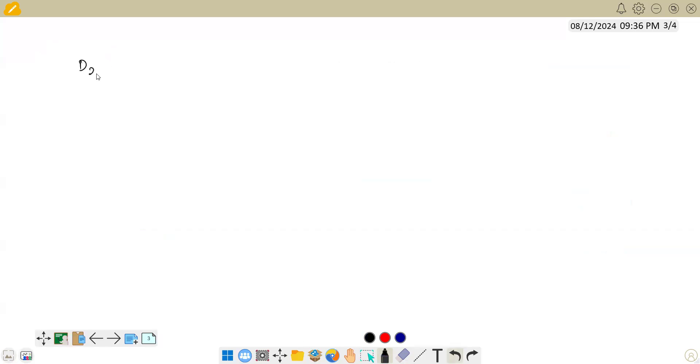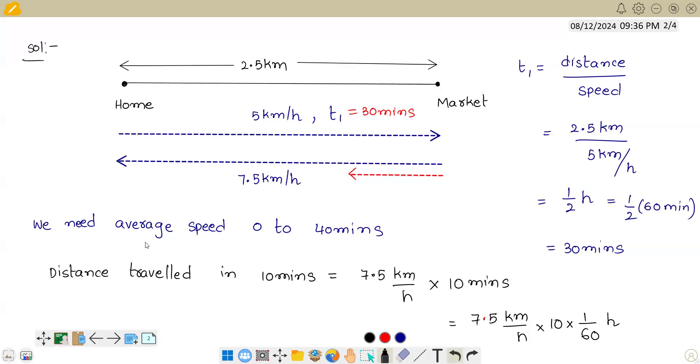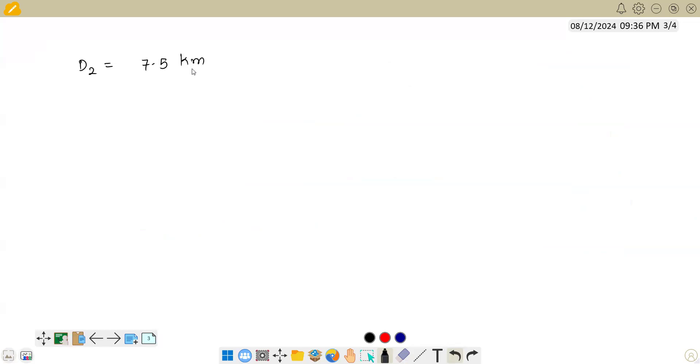So we got D2 equals 7.5 km per hour into 1/6 hour. Hour and hour would cancel out, so we get it as 7.5 by 6 km. So this is the journey that the body is traveling, so it would be roughly 1.25 km.